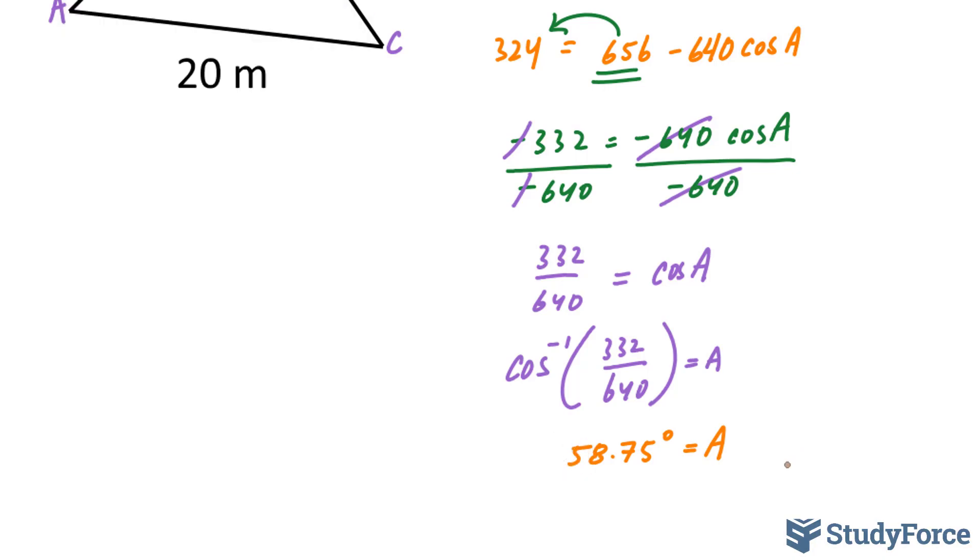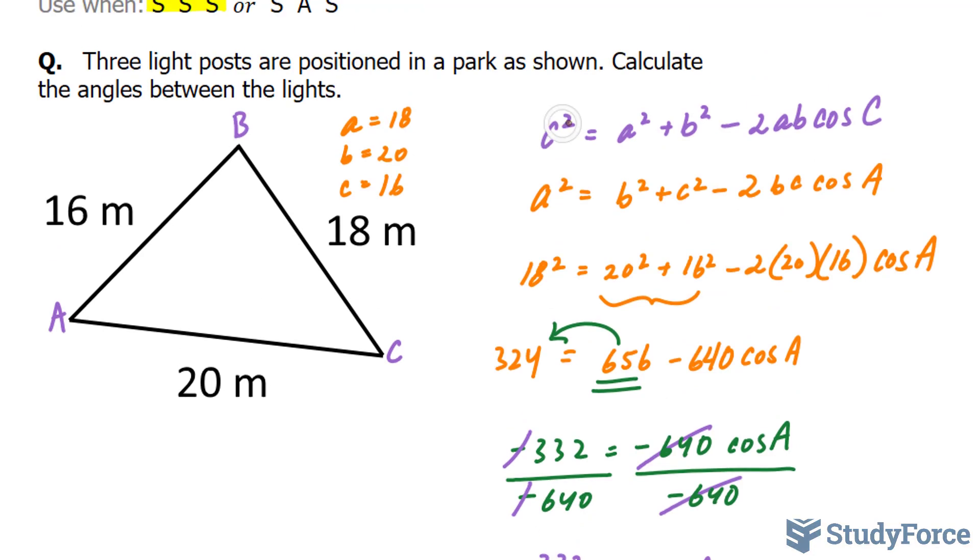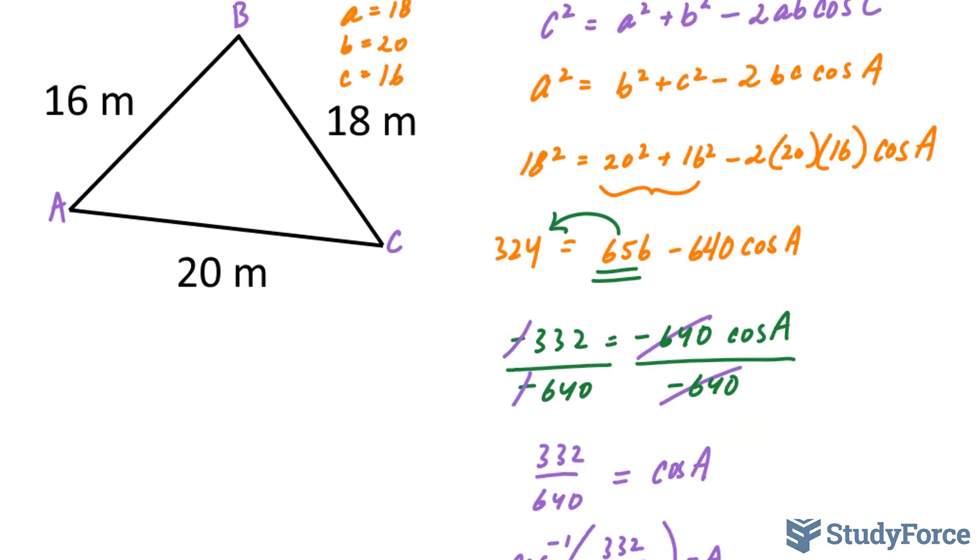So now that we've found our first angle A, we need to find angle either B or C. I'm going to find angle C because the formula is already written down for us. So I'll do that over here. c² = 16². a² is 18² + 20² - 2(18)(20) cos C.